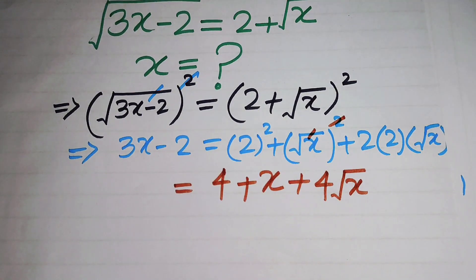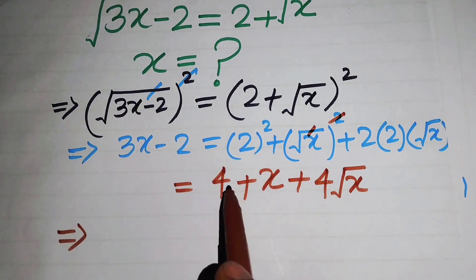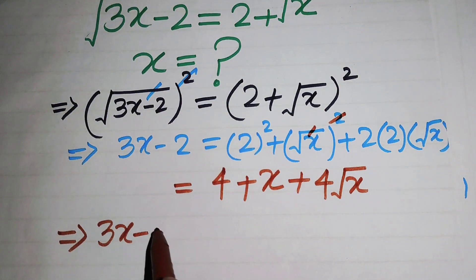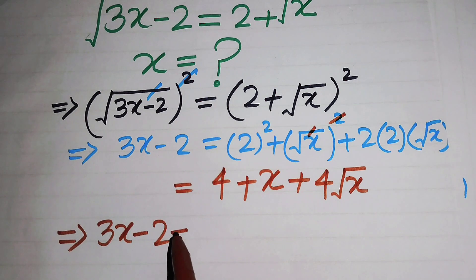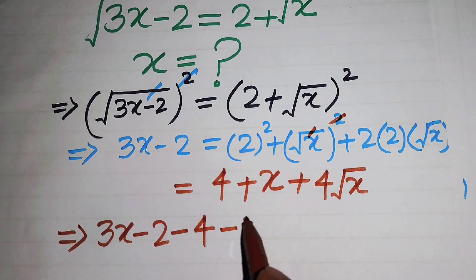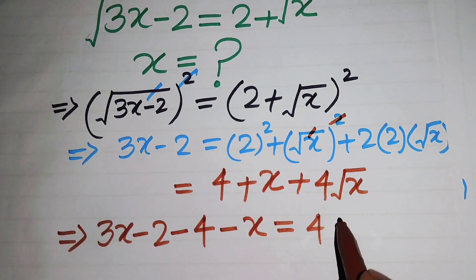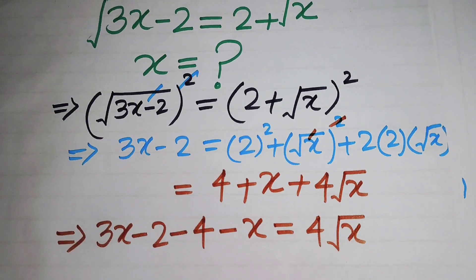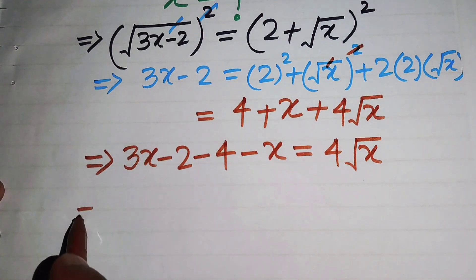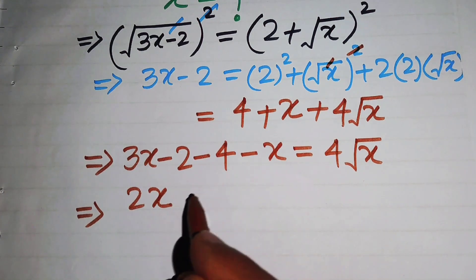In the next step, we isolate the square root term on one side. We move plus 4 and plus x to the left-hand side. Since they are positive, they become negative when moved: 3x minus 2 minus 4 minus x equals 4 times the square root of x.